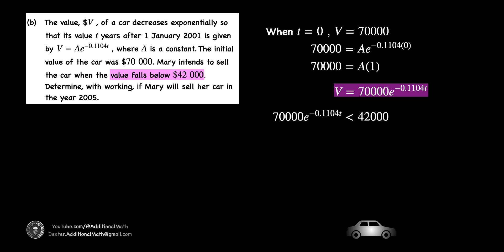The question continues by stating that the value v will fall below $42,000. We will now set v to be less than 42,000. Taking 42,000 and divide it by 70,000, you will have the right side of the inequality to be 0.6.